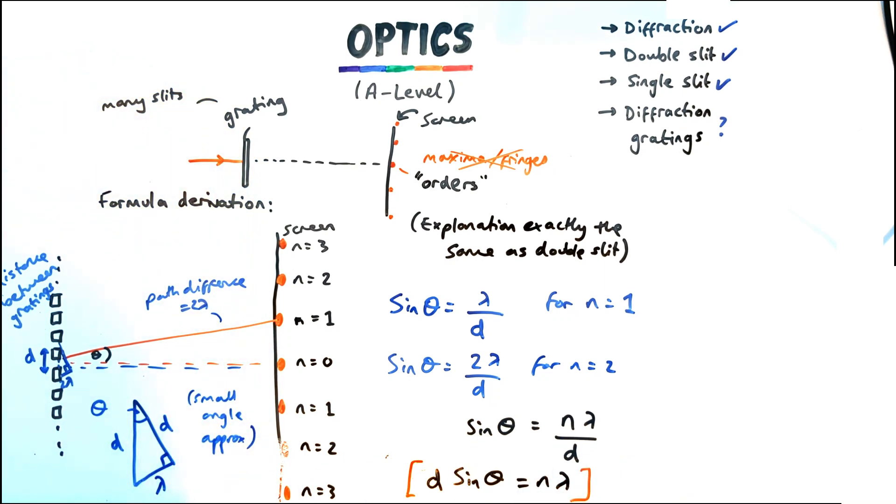So this leaves us with the overall equation which you get given which is d times by sine theta equals n number of orders multiplied by the wavelength of the light.